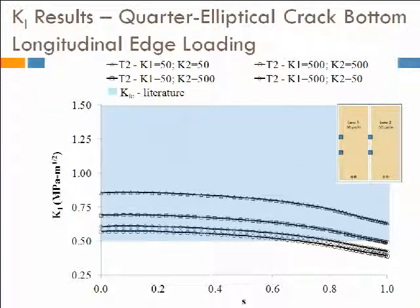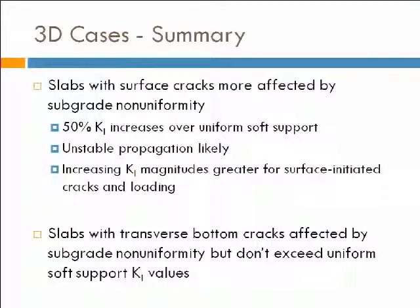Generally, with materials in Illinois, a K₁c of about 1.0 MPa√m is a critical value for concrete in this area. You can see that top cracks would probably have unstable propagation, while bottom cracks would be borderline. Our 3D summary to date: surface cracks are more affected by non-uniformity, so if we have the combination of non-uniformity and poor curing or excessive shrinkage, we're likely to get a combined effect that's easier to propagate and cause unstable crack growth. Furthermore, comparing bottom-up versus top-down potential, top-down has a much higher increase to cause crack propagation — due to the fact that transverse bottom loading has intensity concentrated over a small area, while top loading affects a much larger area.